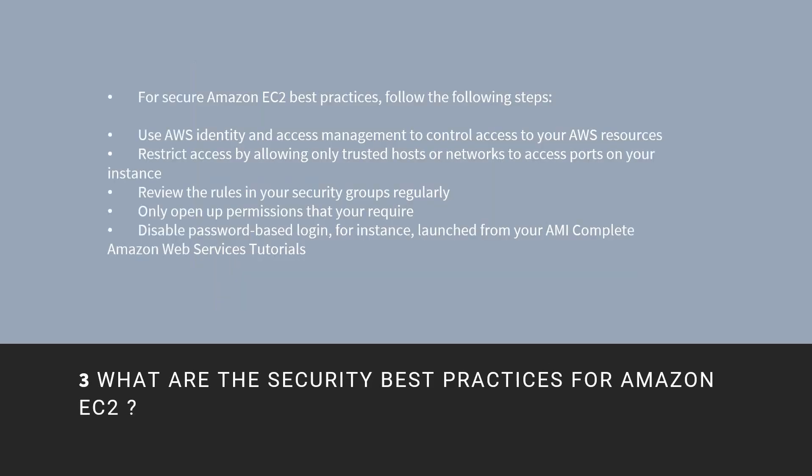What are the security best practices for Amazon EC2? Use AWS Identity and Access Management to control access to your AWS resources. Restrict access by allowing only trusted hosts or networks to access ports on your instance. Review the rules in your security groups regularly and only open up permissions that you require.